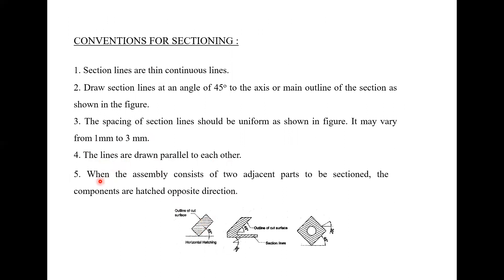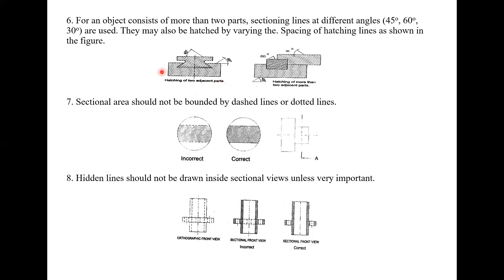When an assembly consists of two adjacent parts to be sectioned, the components are hatched in opposite directions. So when two parts are adjacent and both need to be sectioned, one part is hatched in one direction and the other in the opposite direction.